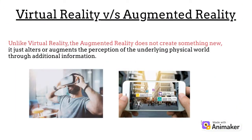One important point to note is that, unlike Virtual Reality, Augmented Reality does not create something new. It just alters or augments the perception of the underlying physical world through additional information. So in Virtual Reality, everything — the surroundings — is changed. But in Augmented Reality, only additional information is added on top of the real existing world, which you see through your camera lenses.